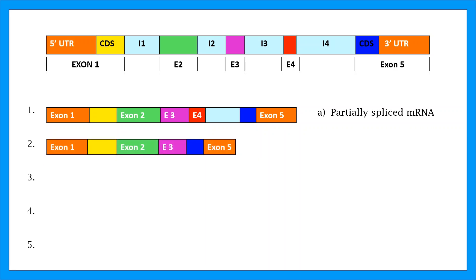The second product has all of the introns removed, so we're good there. When we look at the exons, something's off. They're still in the correct order, but one of them is missing, exon 4. This means that this product has been alternatively spliced.